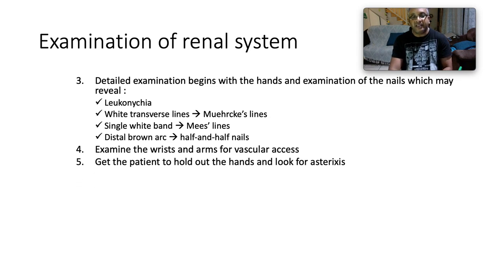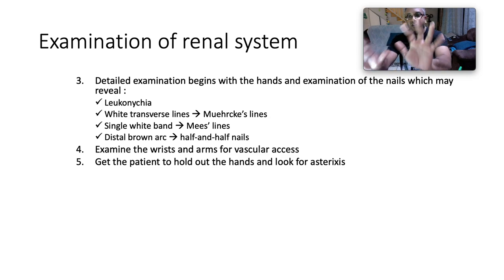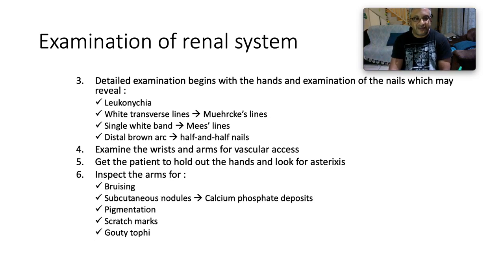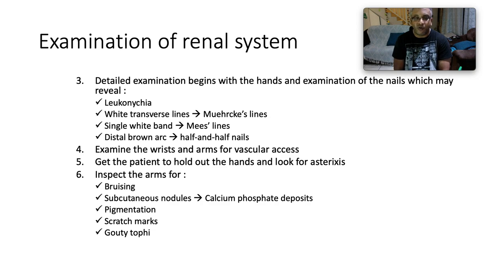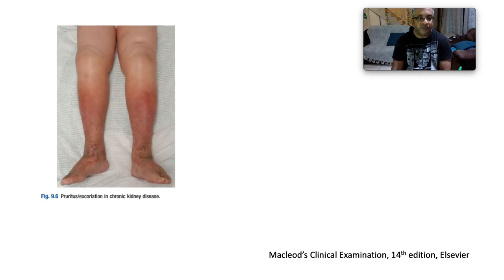Examine the wrists and arms for vascular access sites. Get the patient to cock up the wrist to separate the fingers and look for the flapping tremor of asterixis. Inspect the arms for bruising — in renal impairment there is qualitative platelet dysfunction leading to clotting problems and bruising — as well as subcutaneous nodules, calcium phosphate deposits, pigmentation, scratch marks, and gouty tophi.